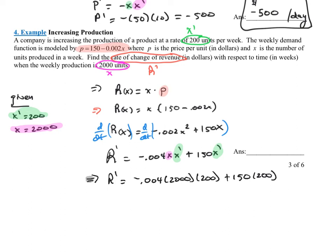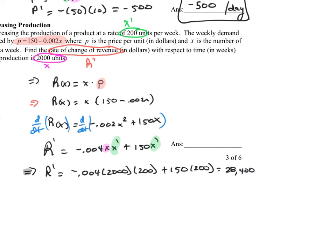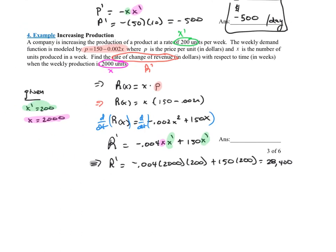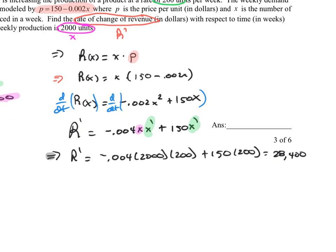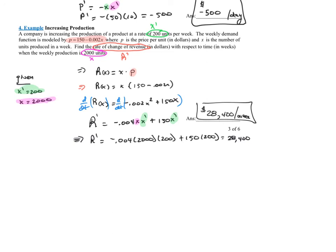Plugging that into the calculator gives approximately $28,400 — please double-check that math. The units are dollars per week, since price is in dollars and time is in weeks. It's a positive number, so revenue is increasing at $28,400 per week. That's at the specific moment when they're producing 2,000 units and increasing at 200 units per week — at that exact moment they can expect revenue to increase by $28,400 over the next week.